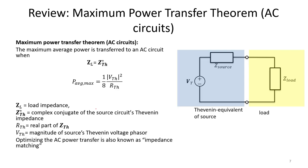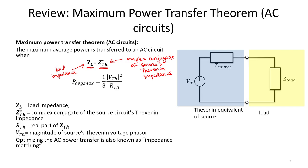The last thing we learned in our previous video was the maximum power transfer theorem for AC circuits. Maximum power transfer is actually somewhat similar to what we learned for DC circuits. The maximum average power will be transferred when the impedance of our load equals the complex conjugate of the source's Thevenin impedance. If that condition is satisfied, the maximum average power transferred is given by the equation shown here — a very important equation for designing AC circuits to transfer as much real power as possible.